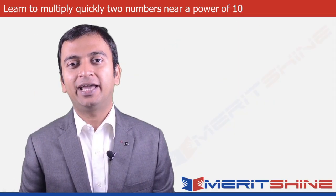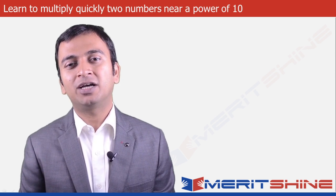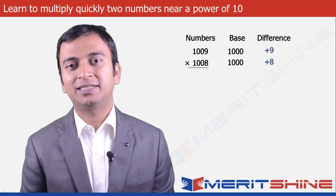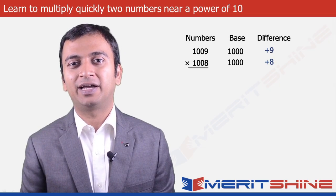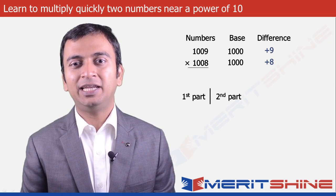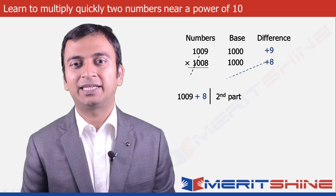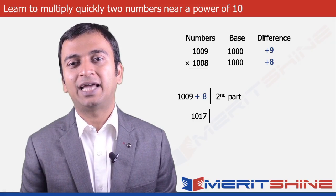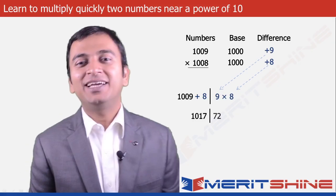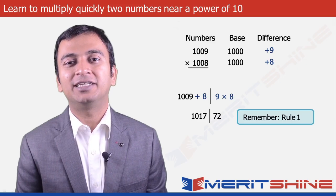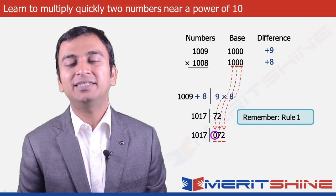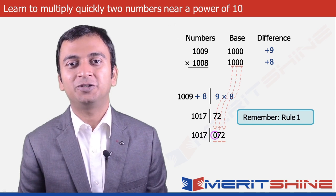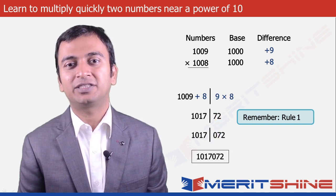Let us now try 1000 as our base. How about multiplying 1009 into 1008? Here the differences would be plus 9 and plus 8. The first part would be 1009 plus 8, giving us 1017. The second part would be plus 9 into 8, which is 72. By our first rule, the second part must be a three-digit number since 1000 has three zeros, so it becomes 072. Our answer would be 1017072.